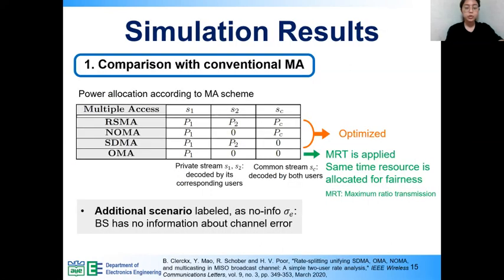In simulation, we consider two user scenarios and provide simulation results to compare with existing multiple access: NOMA, SDMA, OMA. As shown in table, these conventional strategies are subset of RSMA by setting sum of the power of a particular stream to zero. NOMA and SDMA are optimized by modifying proposed algorithm. For OMA, we apply maximum ratio transmission called MRT to precoding vector and assume that the same time resource is allocated to user 1 and user 2 for fairness.